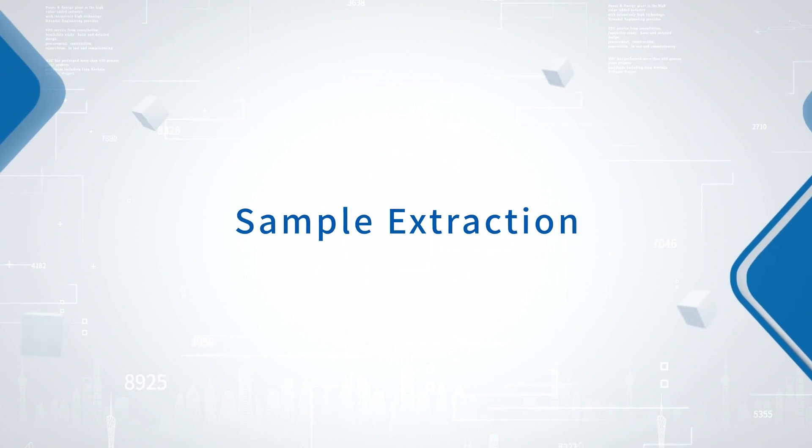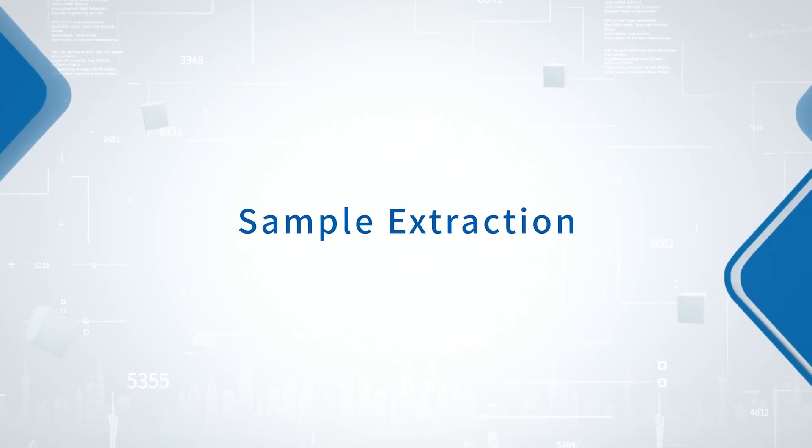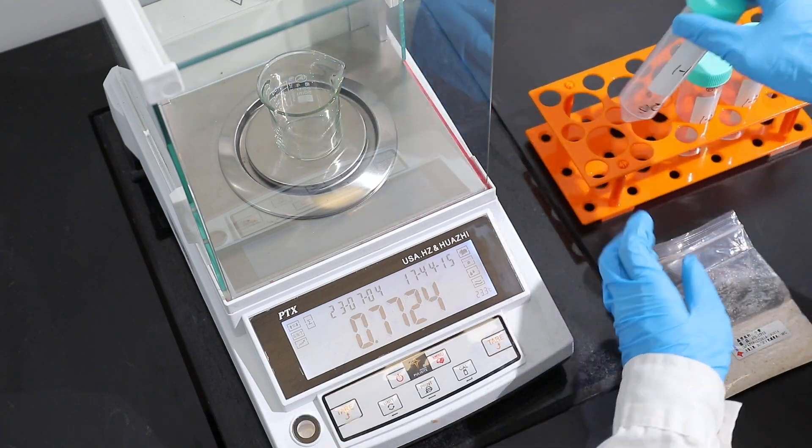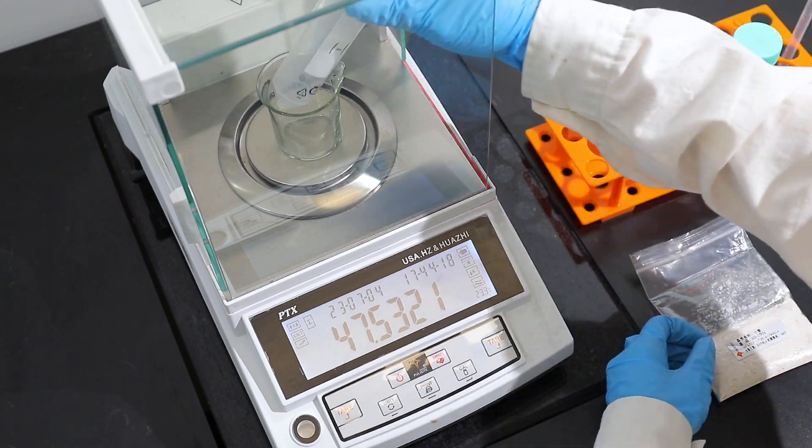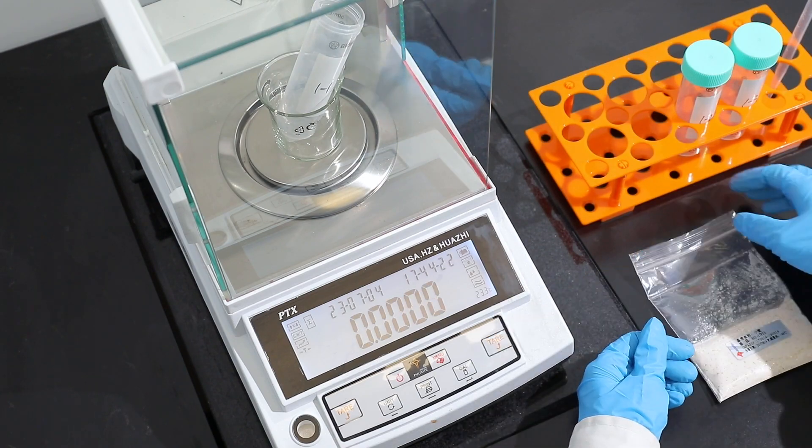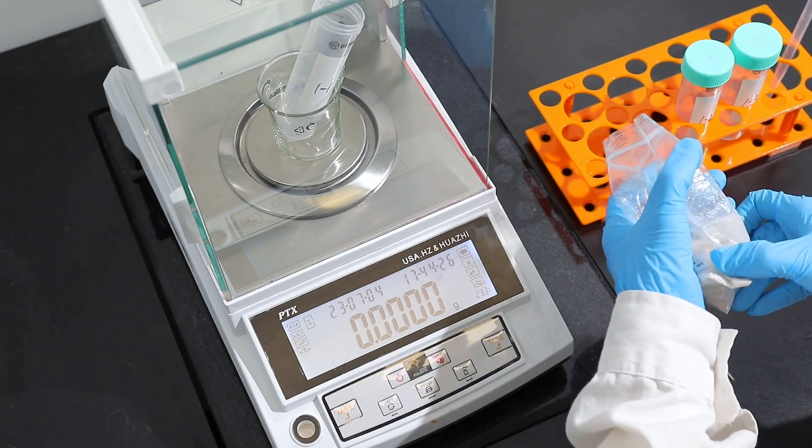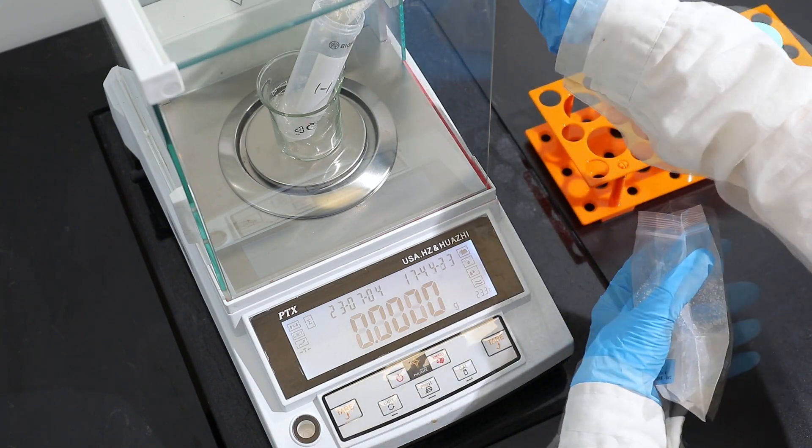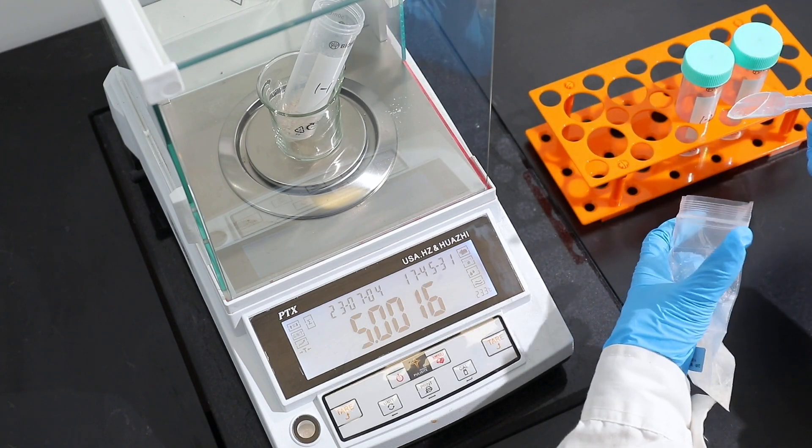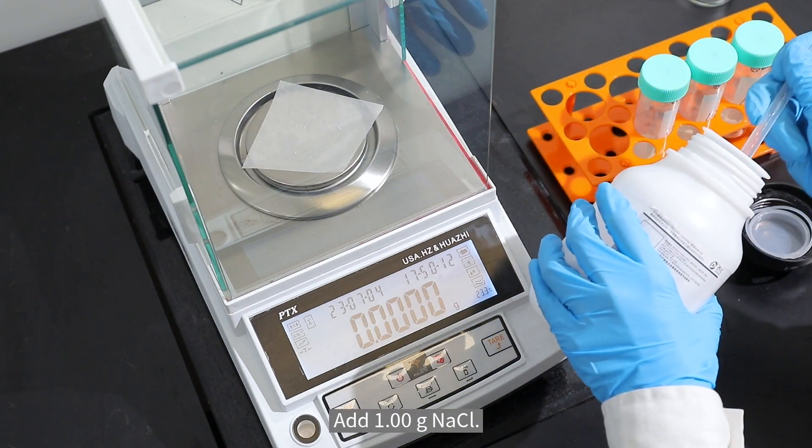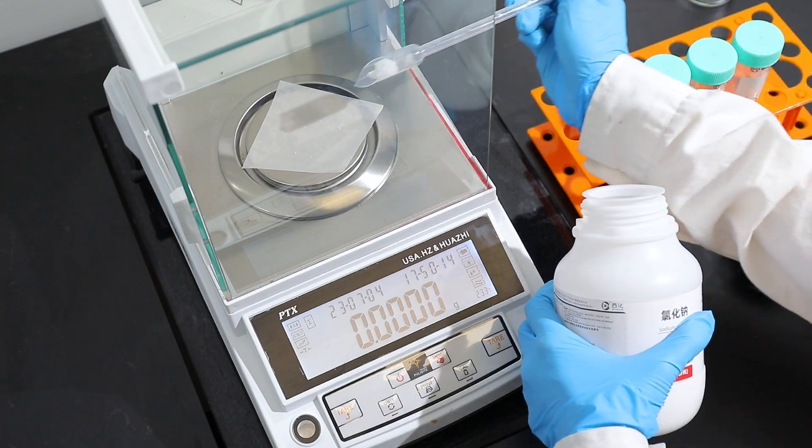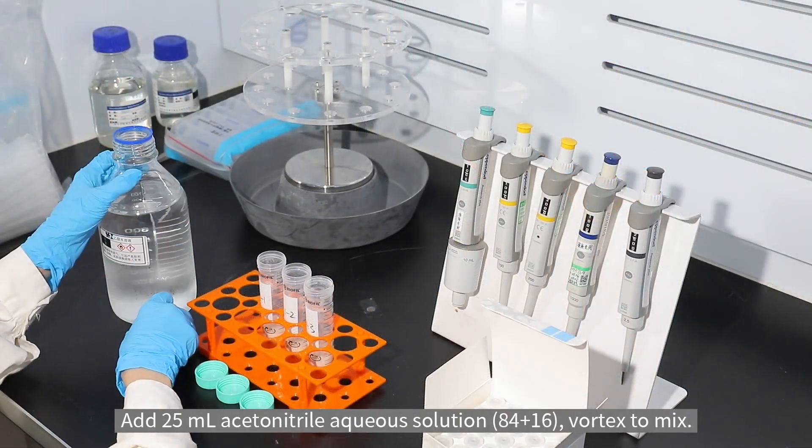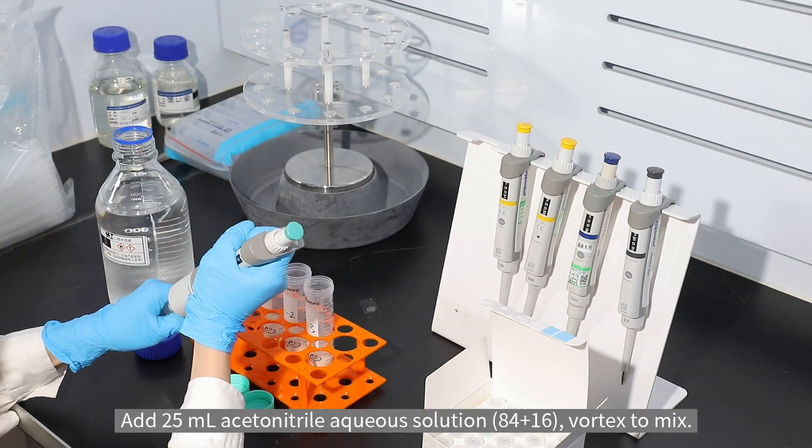Sample Extraction: Weigh 5g sample into the 50ml centrifuge tube. Add 1g normal saline. Add 25ml acetone trial aqueous solution. Vortex to mix.